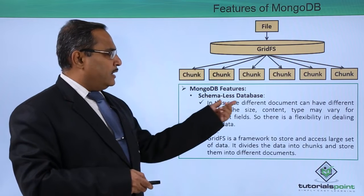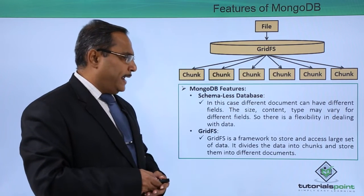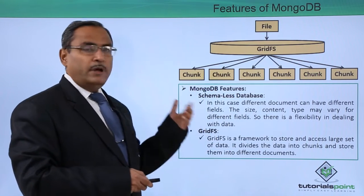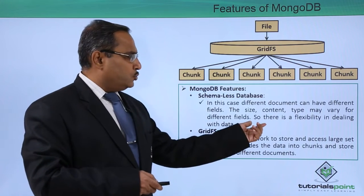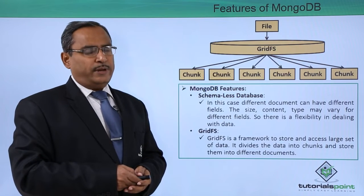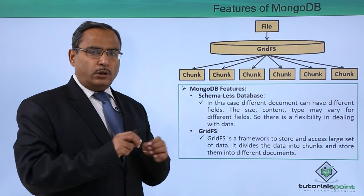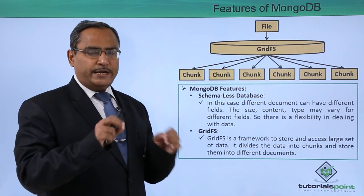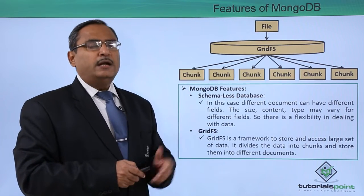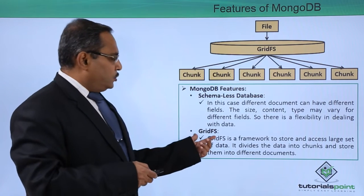Next, we have the schema-less database. Different documents can have different fields, and the size, content, and type may vary from one document to another, giving flexibility in dealing with data. In a relational database, the schema is totally static — all records must have the same kind of data and data types. But in MongoDB, different documents may have different data types and a different number of fields.